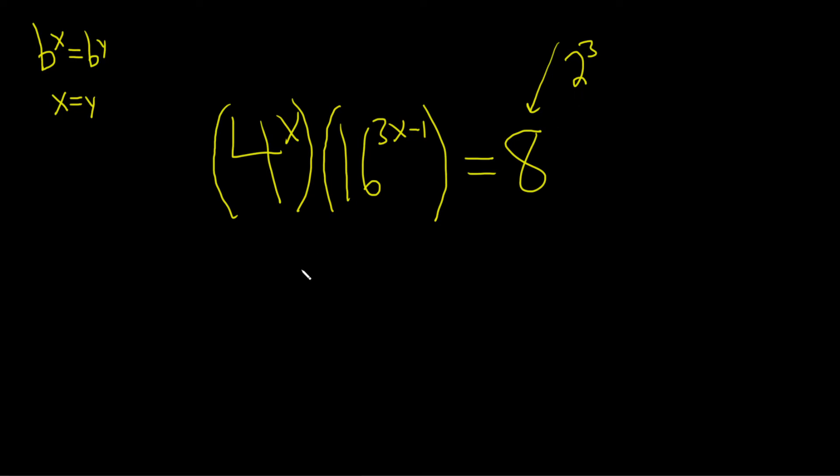So let's go ahead and start by rewriting everything on the left-hand side very carefully with 2s. So 4 can be written as 2 squared. So this is 2 squared to the x times, and then 16 is 2 to the 4. So this is